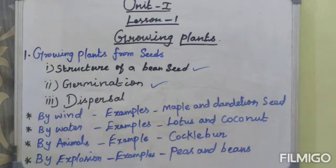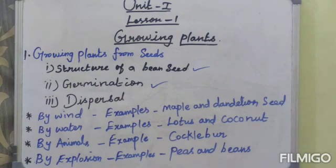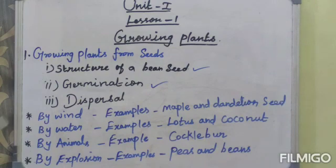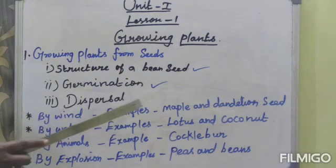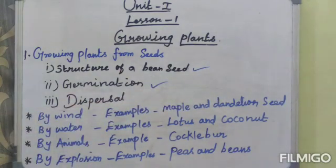Let us learn what is dispersal. The process by which seeds are scattered away from the parent plant is called dispersal. Some ways of seed dispersal are given below. First: dispersal by wind. Seeds of certain plants are very light and have wing-like structures or hair on them. These seeds are easily carried away by the wind from one place to another. Examples: maple and dandelion seeds.